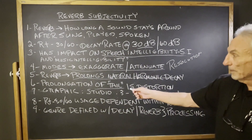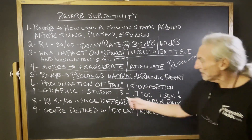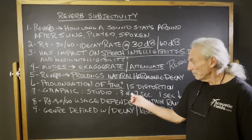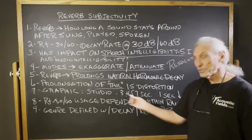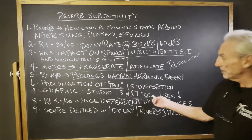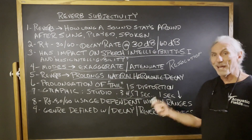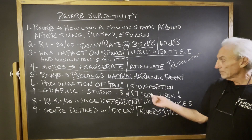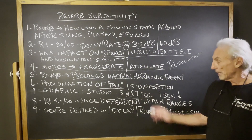Let's look at this graphic here. You can see studio ranges of 0.3 to 0.7 seconds. That's a range, and what does that tell you? It's a range, so it tells you it's subjective. You might prefer 0.4, you might prefer 0.5 — it just depends on your usage. This is where the terms dry, wet, dead, and live come from. It's a subjective measure of reverberation time.